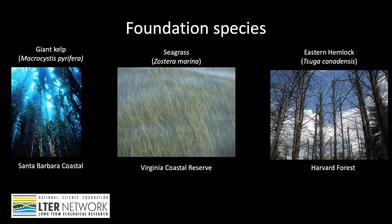Throughout the 40-year history of the LTER network, research at many sites has rigorously explored how particular species or types of species alter ecosystem functioning and services. LTER researchers at ecosystems as diverse as the Santa Barbara Coastal, Virginia Coastal Reserve, and Harvard Forest are testing the hypothesis that individual species such as giant kelp, seagrasses, and hemlock trees can be foundation species in the ecosystem, creating fundamentally different abiotic and biotic conditions than would exist without them. This picture from Harvard Forest shows the canopy of hemlock trees that were girdled to simulate the spread of the hemlock woolly adelgid and understand how the loss of this tree species will alter these forests.